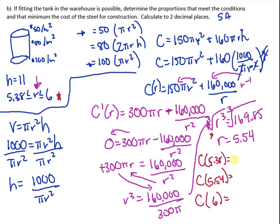So subbing these back in, the cost at 5.38, we get $43,380. The cost at 5.54, we get $43,344. And the cost at 6, we get $43,631. Therefore, we want to look at the minimal cost. So the smallest number here, I get $43,344.